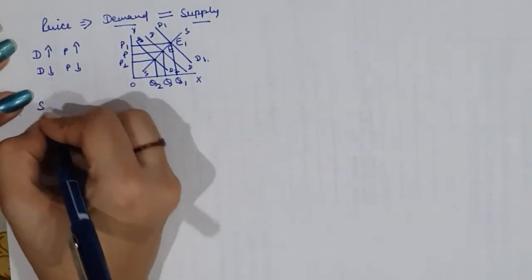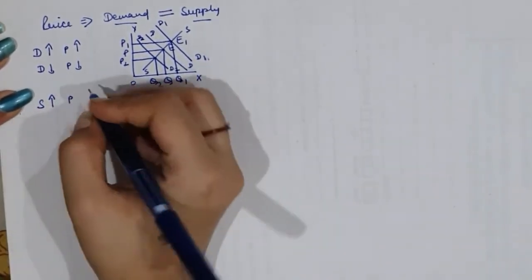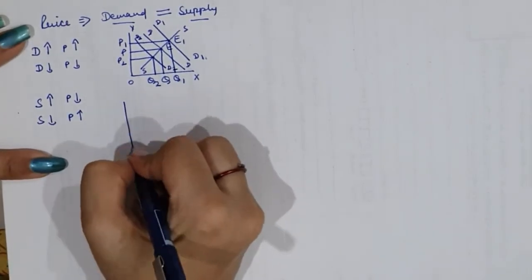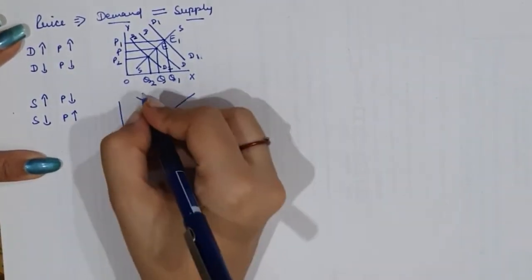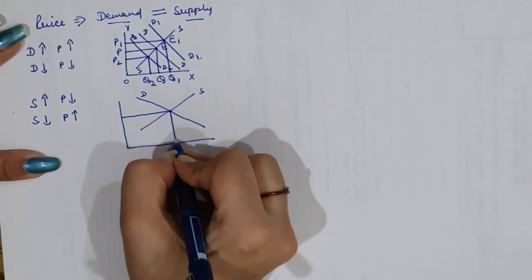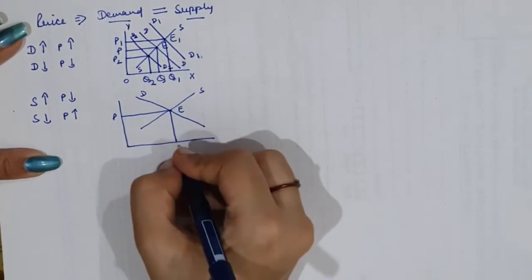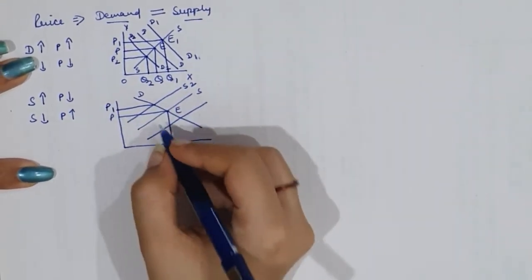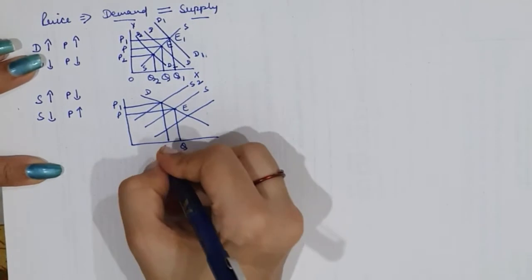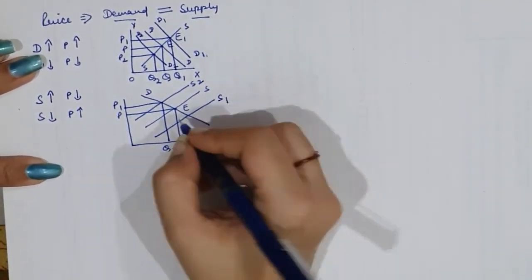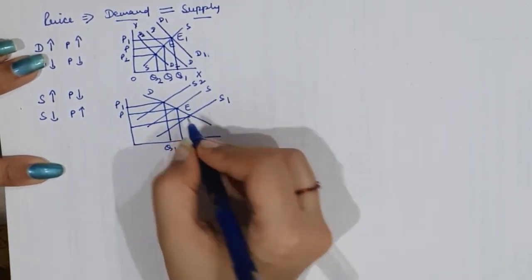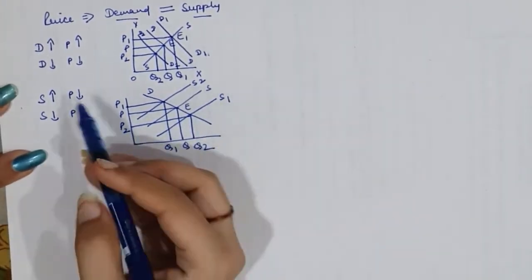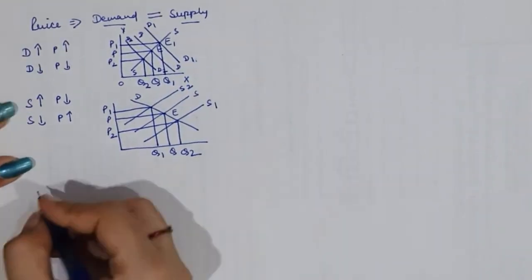The same applies to supply. If supply rises, price will fall. If supply falls, price will rise. With our demand and supply curves at established equilibrium: if supply falls to S2, price rises to P1 level. If supply rises to S1, price falls to OP2. So price is affected by changes in both demand and supply.